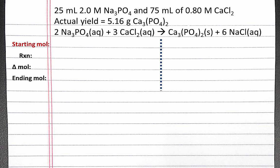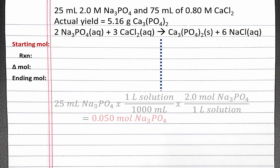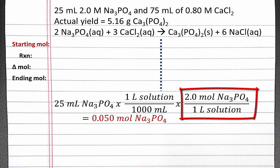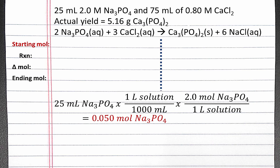Now we can solve this problem using a limiting reagent table. We'll begin by calculating the starting moles of each of our reactants. To calculate starting moles of sodium phosphate, we begin with 25 milliliters of our sodium phosphate solution, convert to liters of solution, and then use the molarity of 2 molar to convert from liters of solution to moles of sodium phosphate. When we multiply this out, we get 0.05 moles of sodium phosphate.